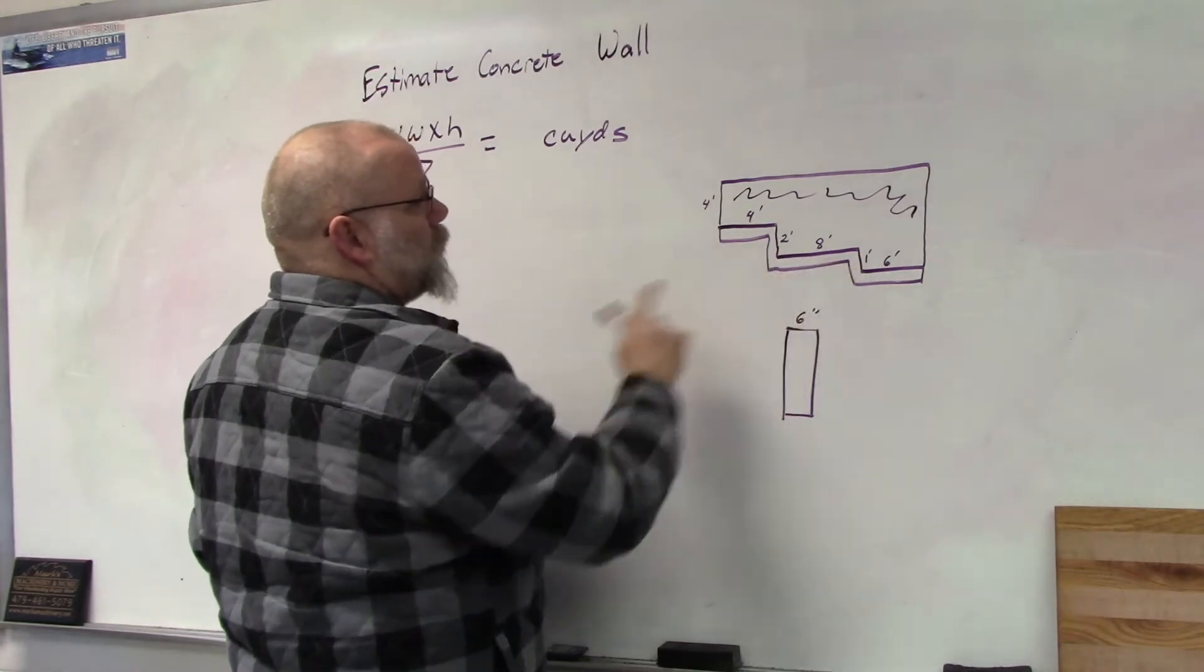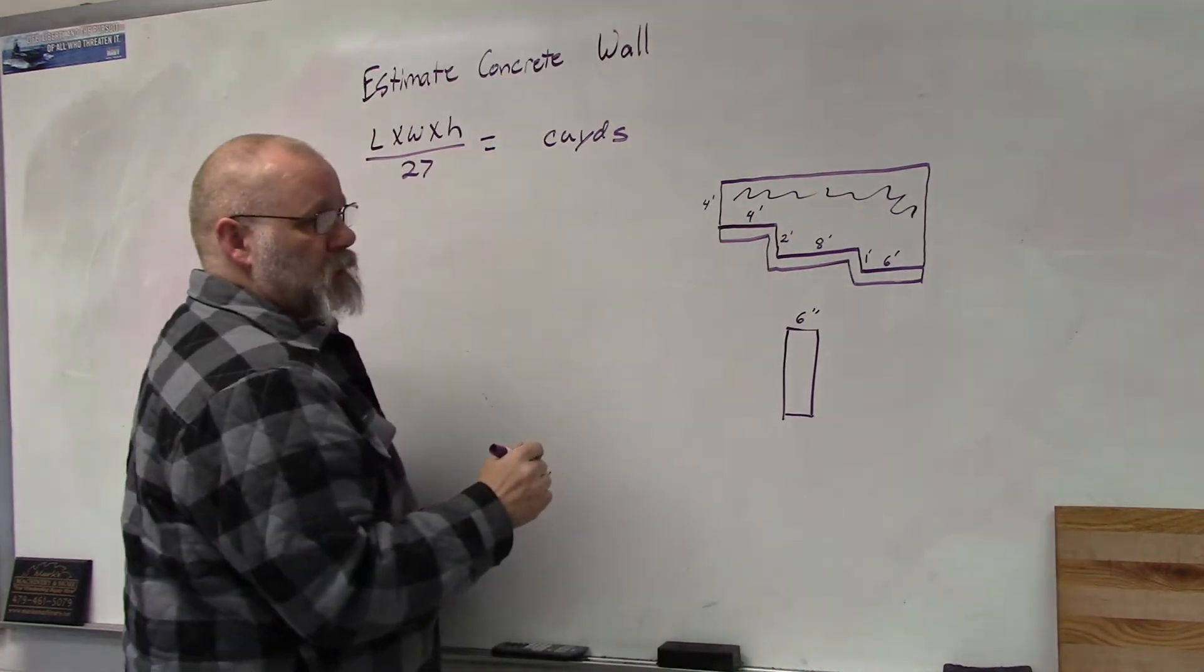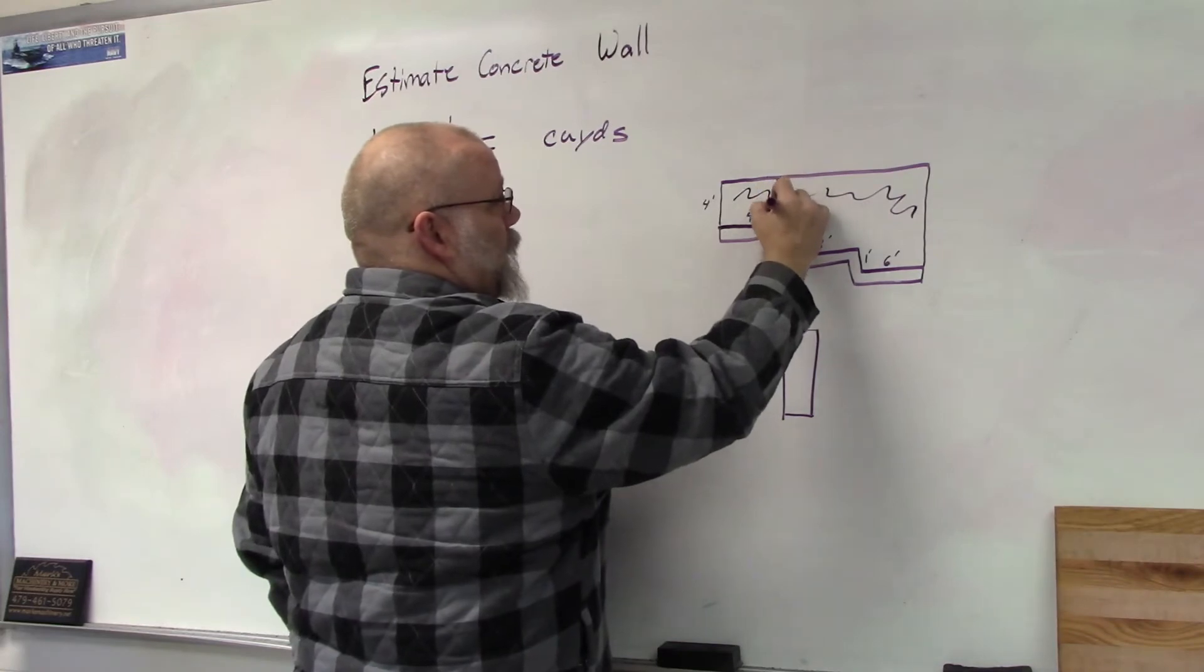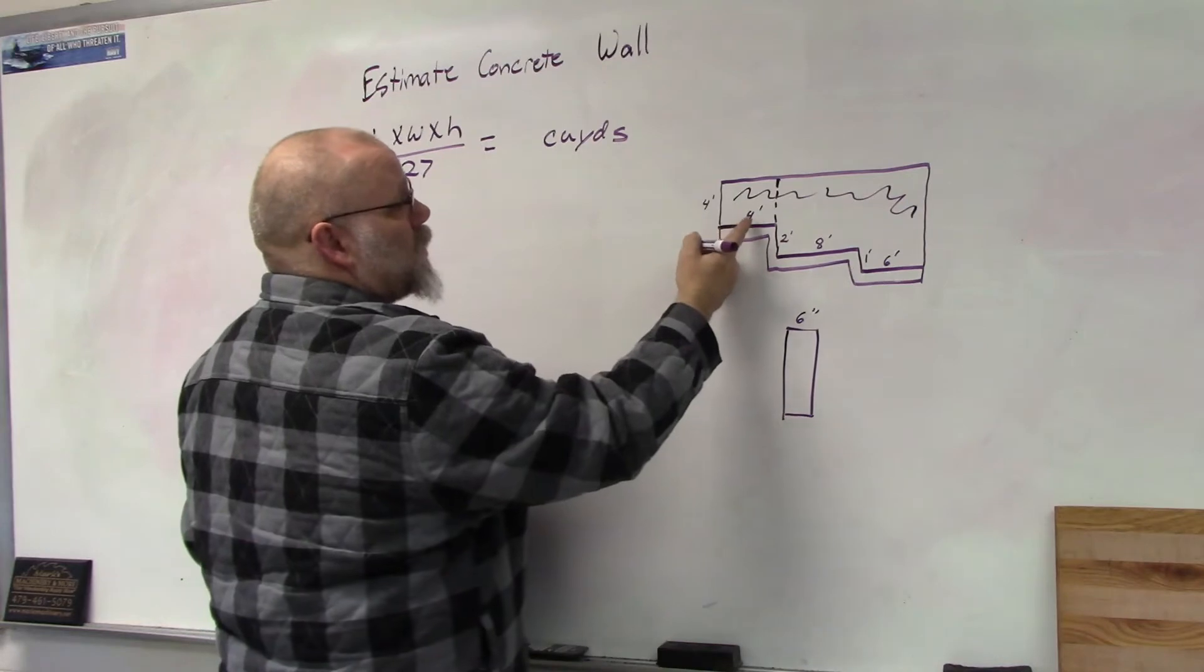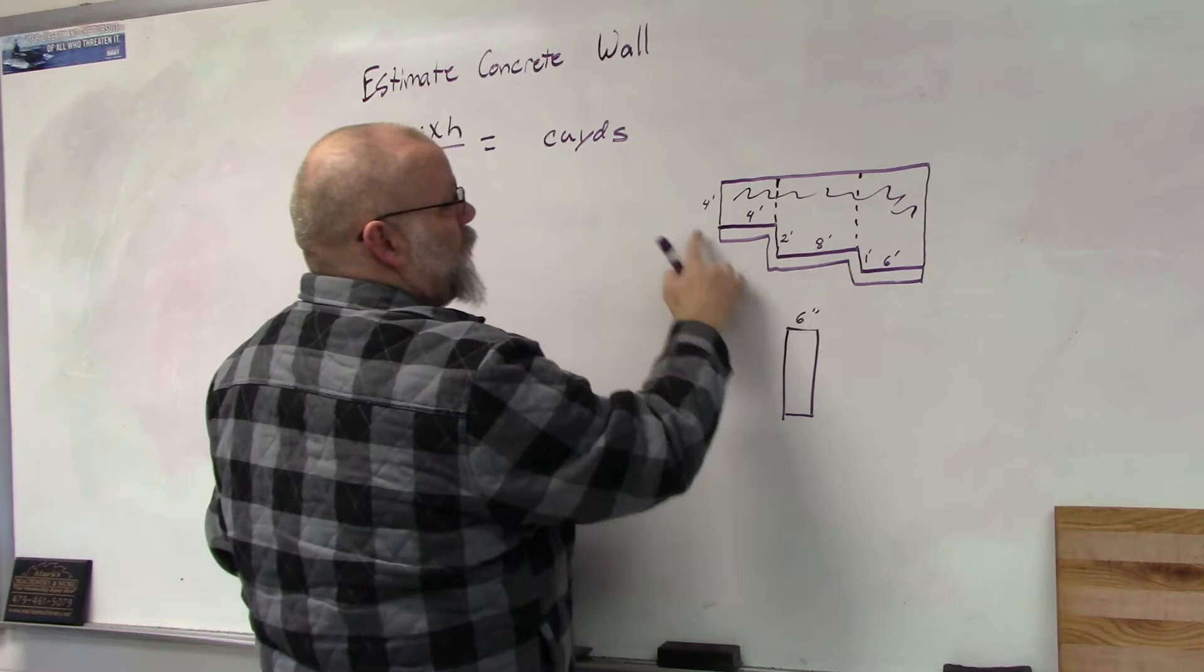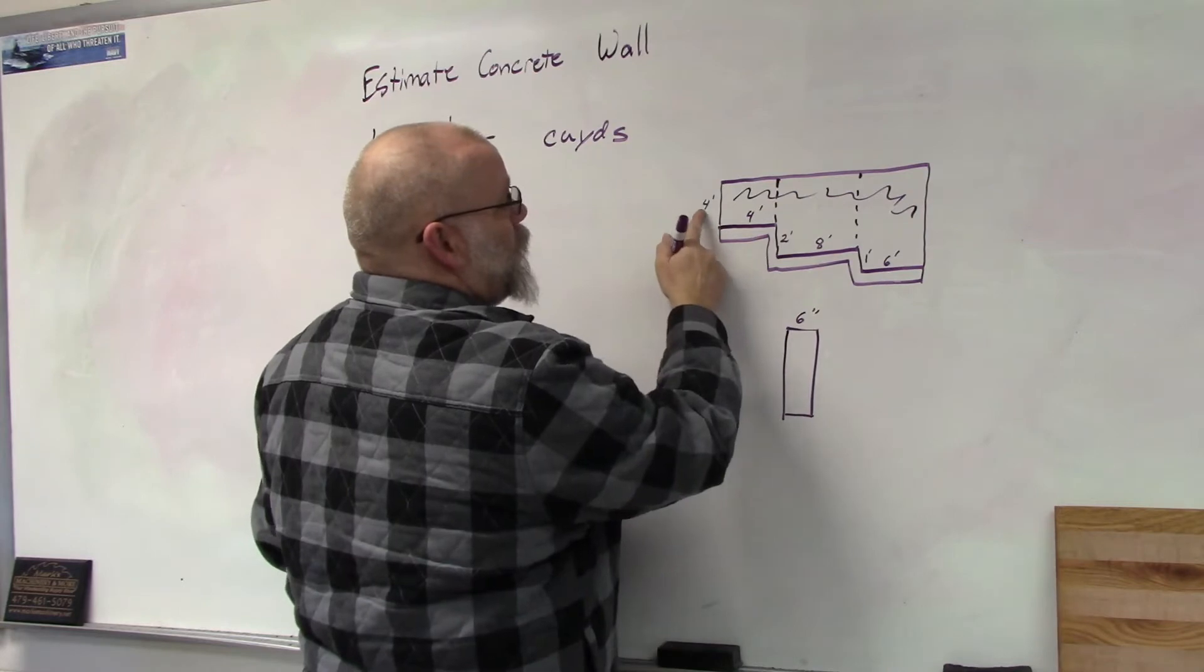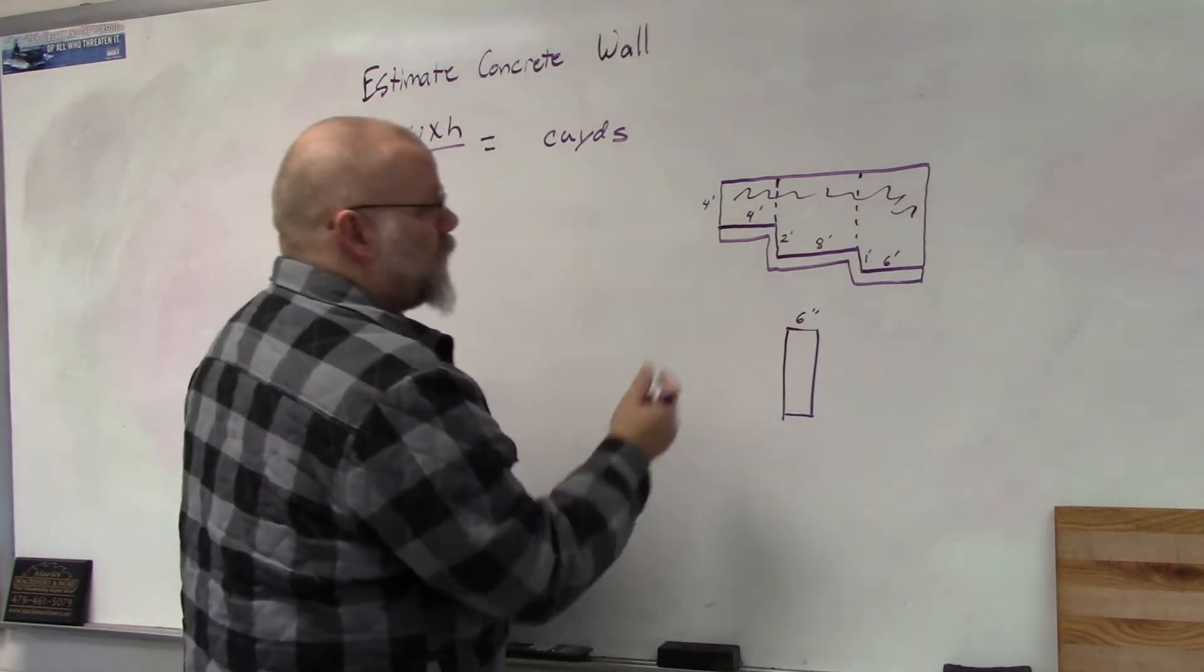Since this is not one rectangle, we're going to divide it up into multiple rectangles and do multiple equations. We're going to do this section which is four by four, then this section which is eight by six because it's four plus two, and then this last section which is six by seven because it's four plus two plus one.